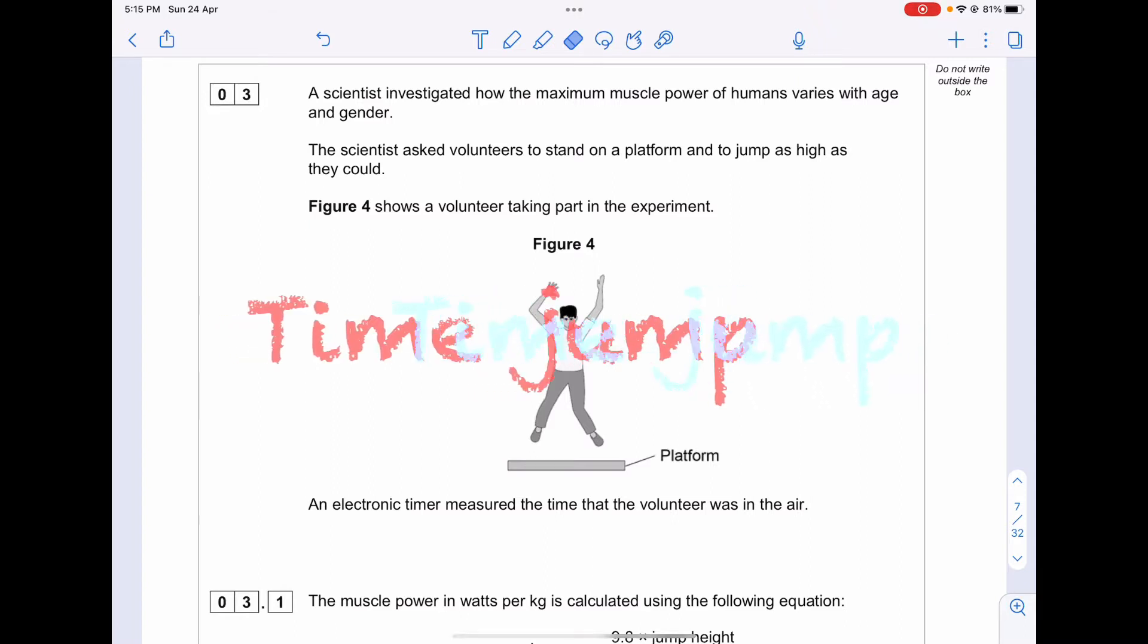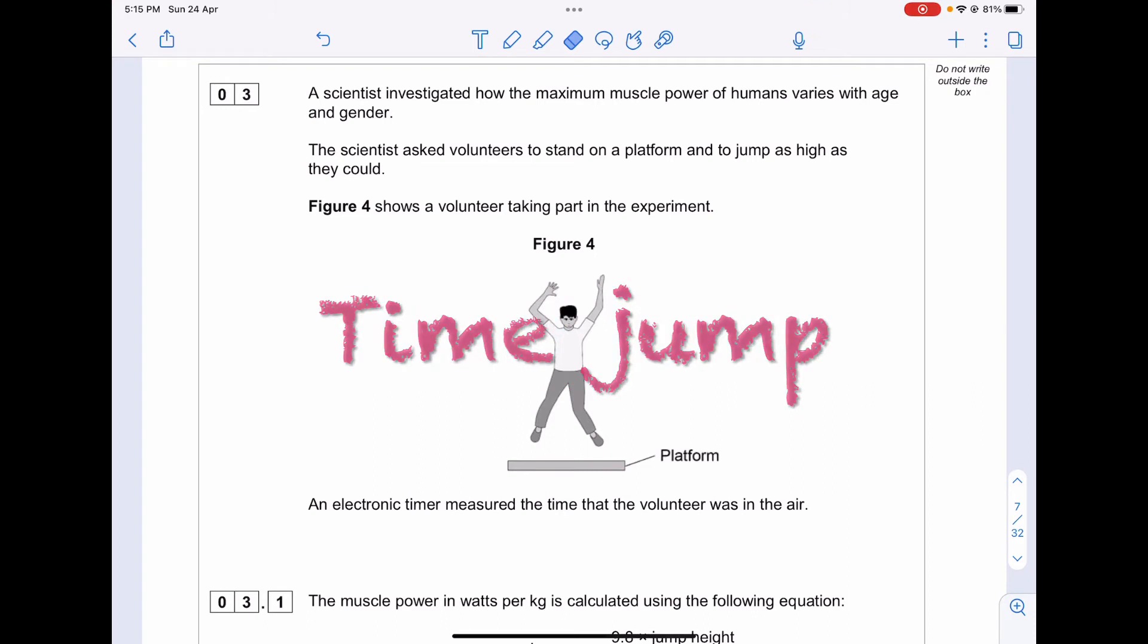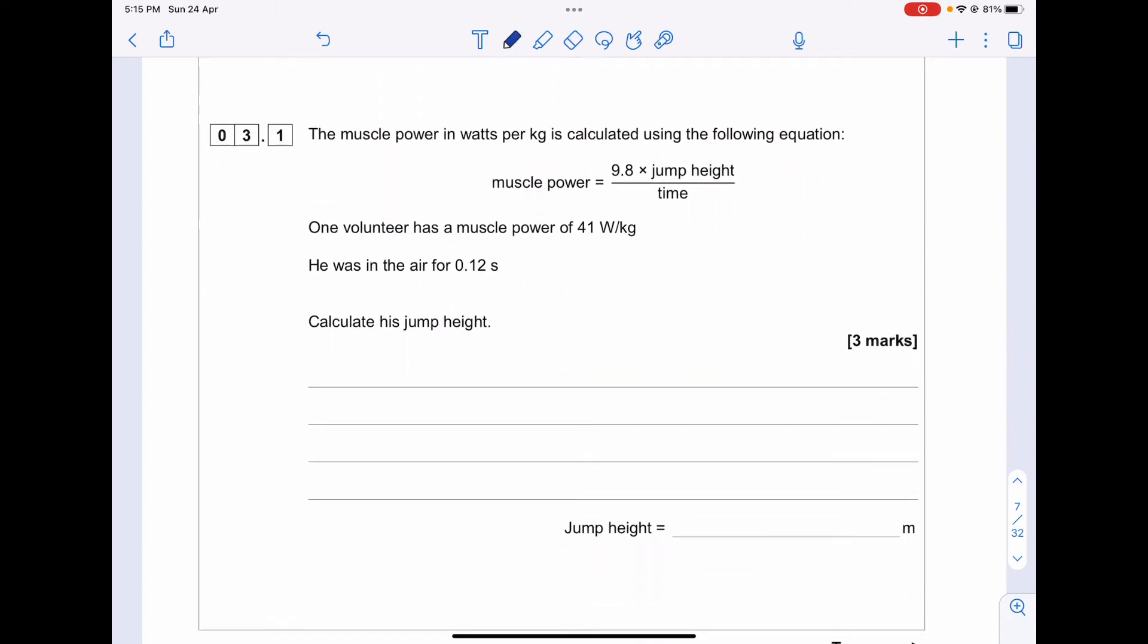An electronic timer measured the time that the volunteer was in the air. The muscle power in watts per kilogram is calculated using the following equation: muscle power equals 9.8 times the jump height h divided by the time t. So the formula is power per mass equals g times h divided by t.